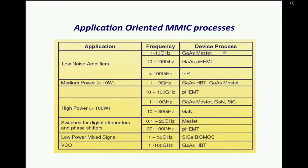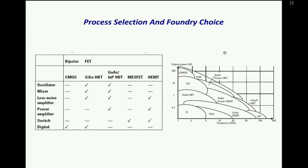Some defense foundries like Northrop Grumman have developed gallium nitride up to 100 GHz, but that is not available to common users. For switches and mixed-signal applications, one can use silicon-germanium BiCMOS, and VCOs can use HBT. These represent the technology and device choices available to MMIC designers.